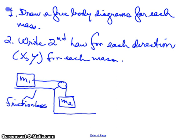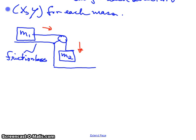By the way, this thing is going to move this way, and this thing is going to move this way. So let's extend this page a little bit, and then we will draw our free-body diagrams. Here's mass 1, and here's mass 2. We'll draw them far apart because we're going to write underneath them.